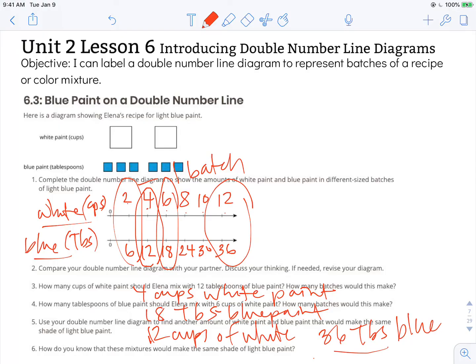How do you know that these mixtures would make the same shade of light blue paint? Because I've increased both of my values by the same amount. This 12 is the same thing as 2 times 6, so 2 cups from the original recipe made 6 times bigger. And this 36 is the same thing as 6 tablespoons from the original recipe and also increased by 6. So we used the same factor to increase both of those values in my recipe.